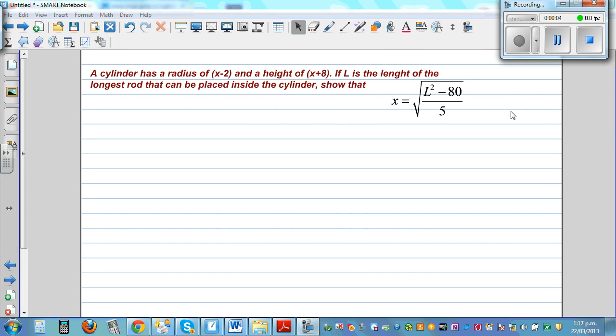A cylinder has a radius of x minus 2 and a height of x plus 8. If L is the length of the longest rod that can be placed inside the cylinder, show that x equals the square root of L squared minus 80 over 5.